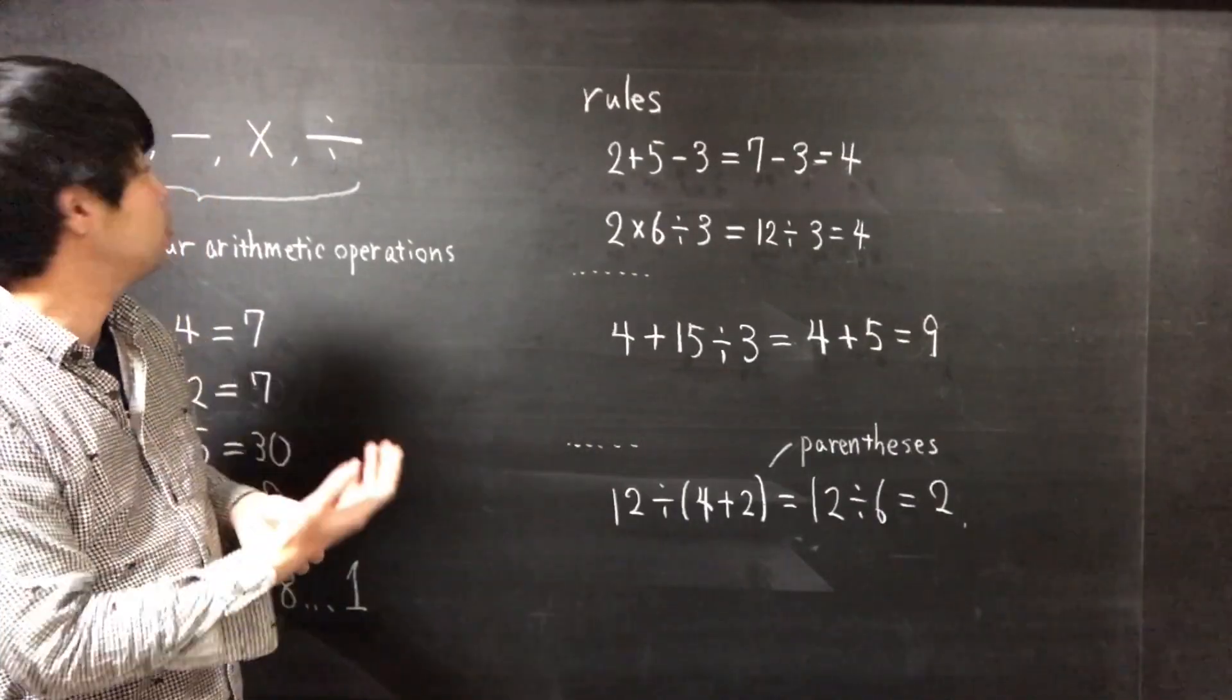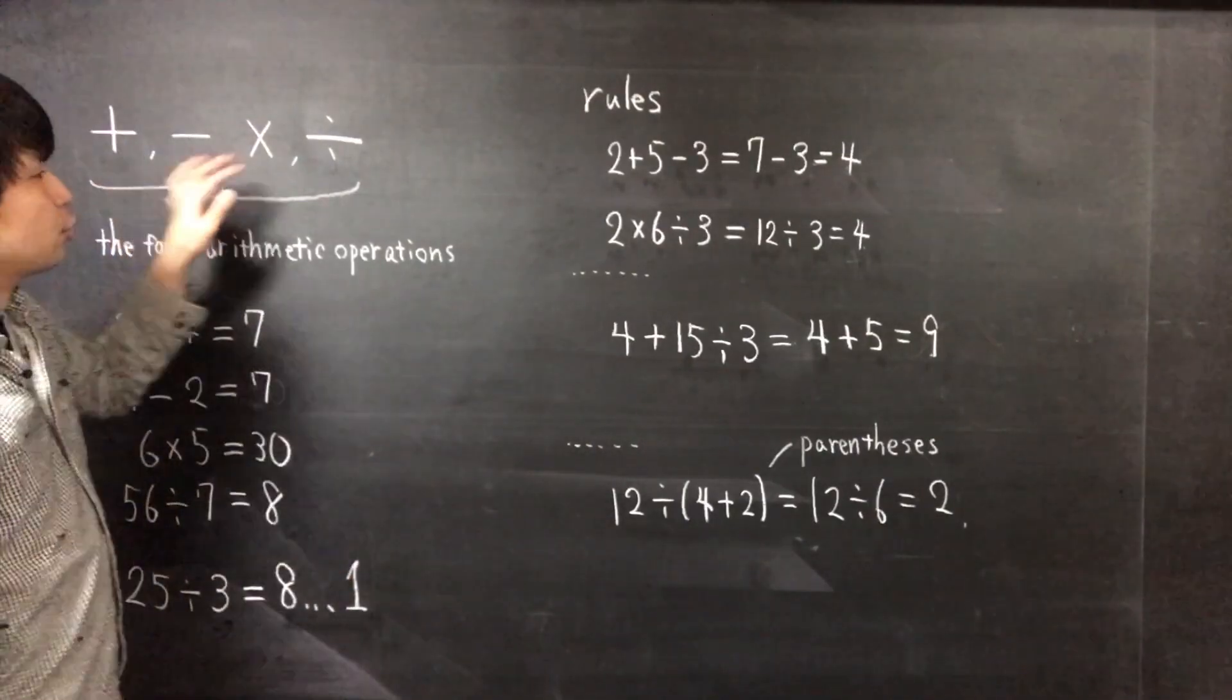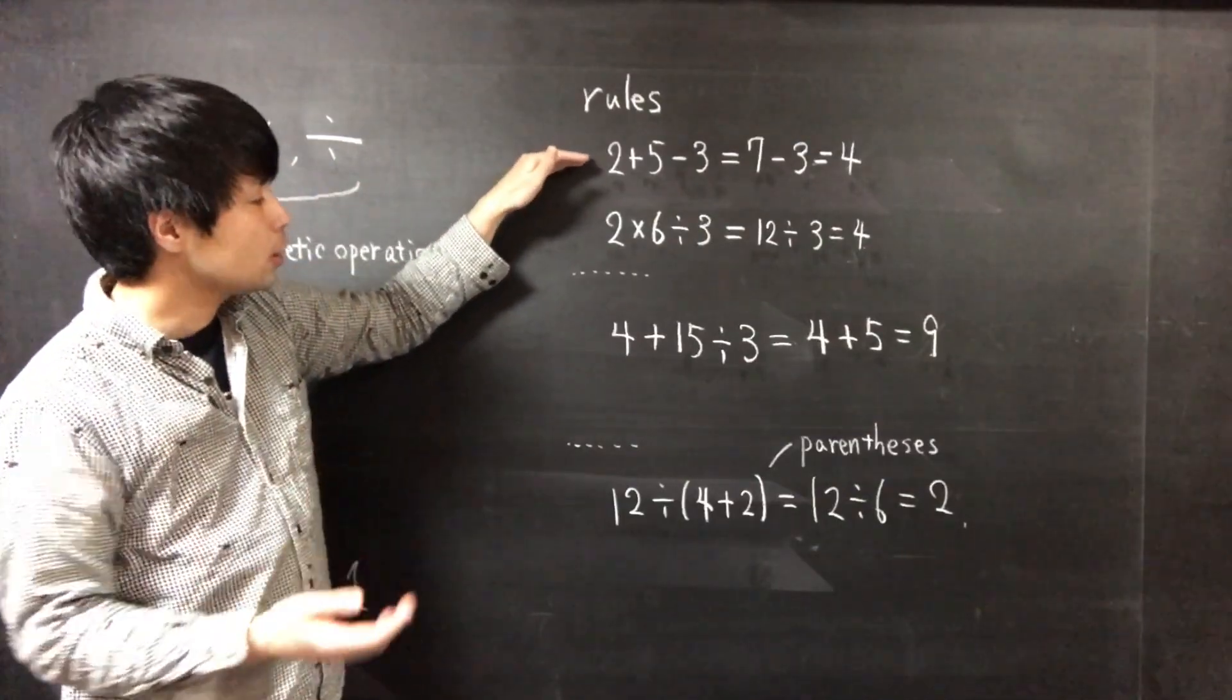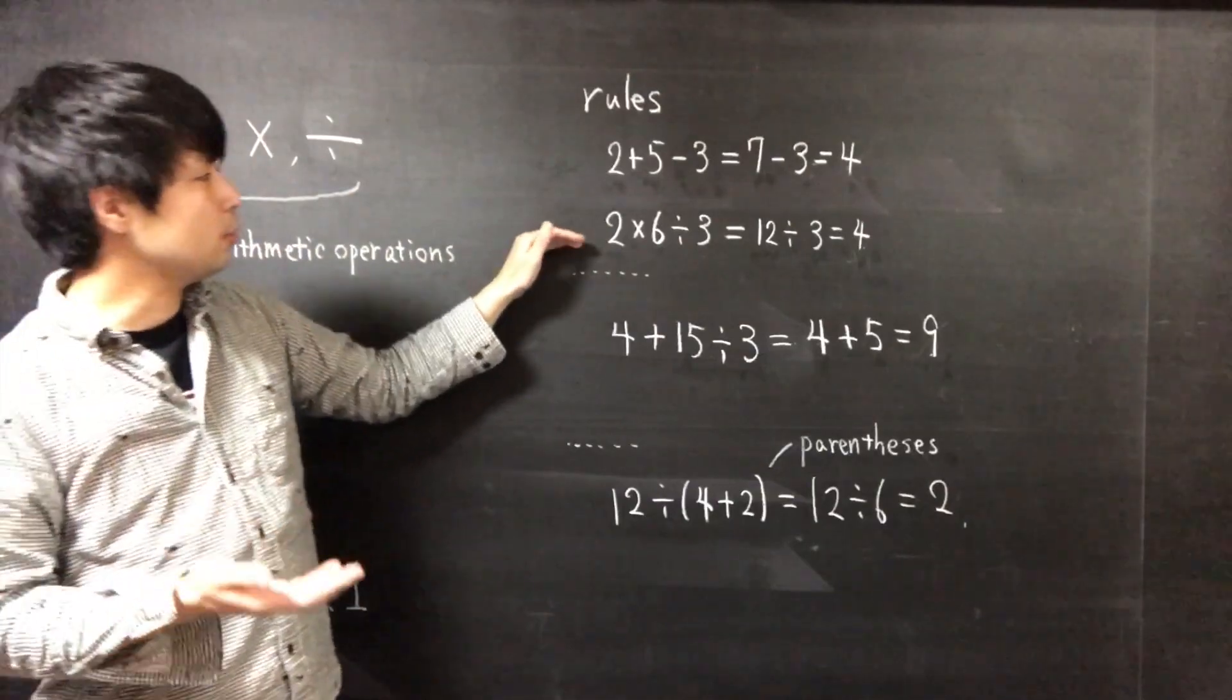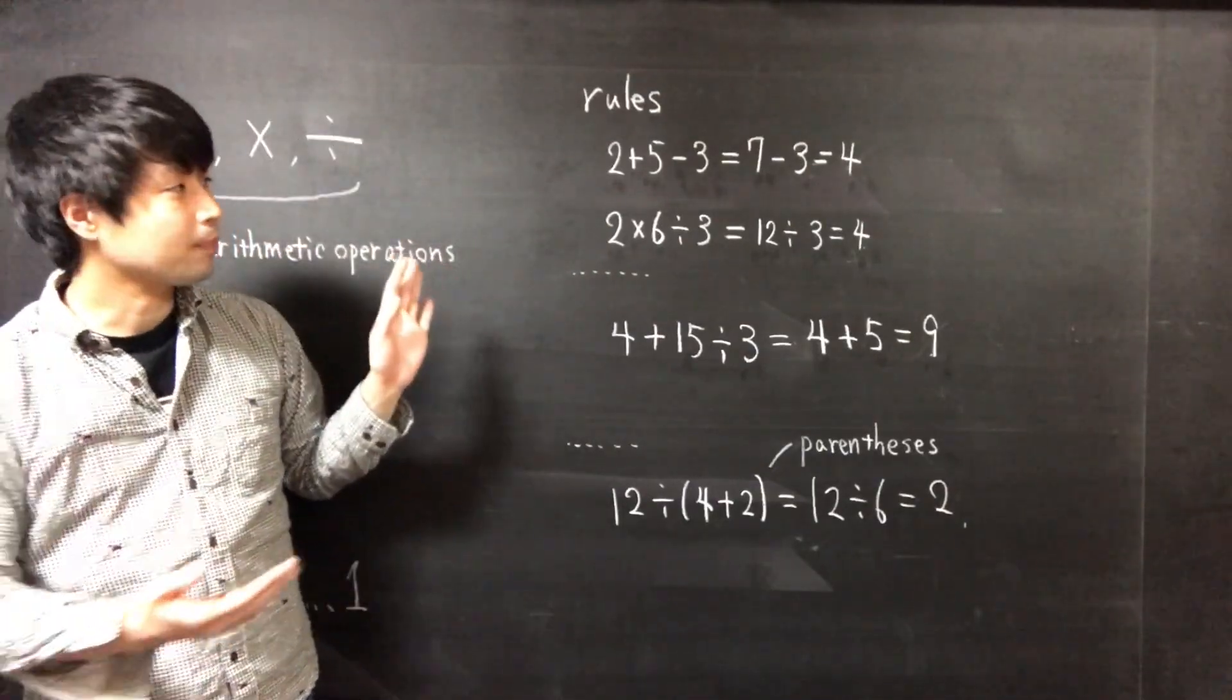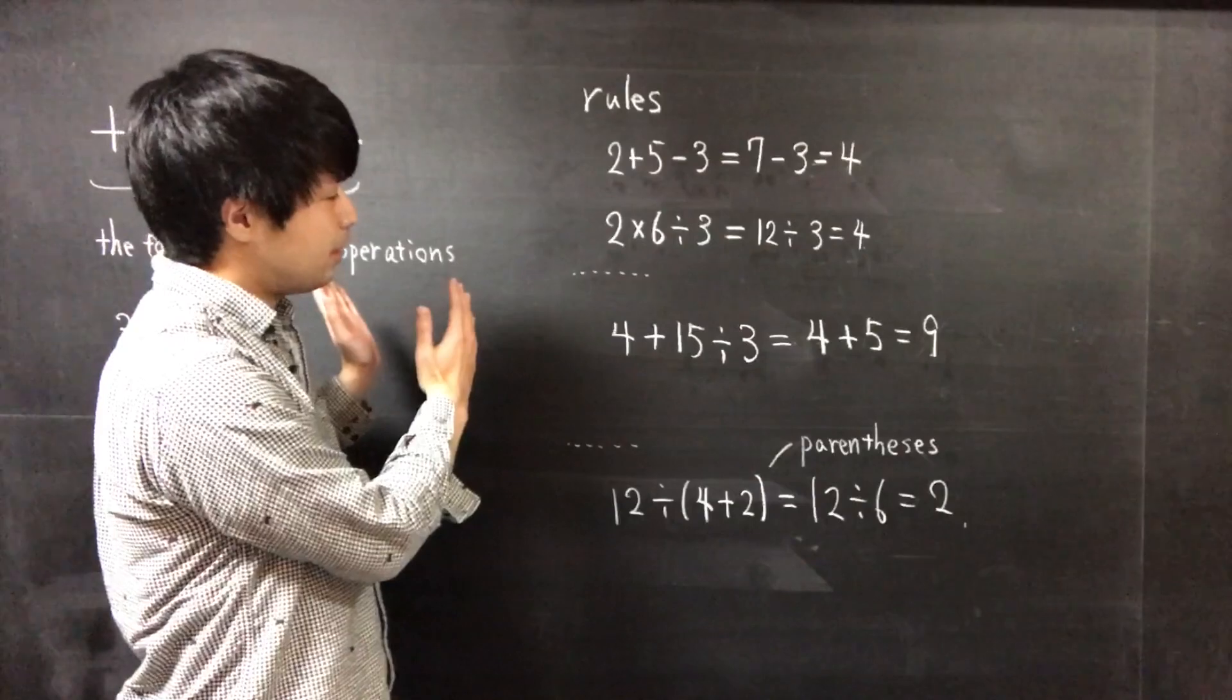The four arithmetic operations has the following rules. For expressions consisting of only addition and subtraction, or consisting of only multiplication and division, we calculate them from left to right.